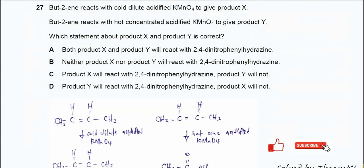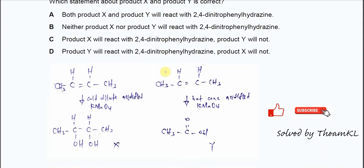Question 27. Butene reacts with cold dilute acidified KMnO4 to give X. And butene reacts with hot concentrated acidified KMnO4 to give Y. So which statement about X and Y is correct? Before you answer the question, you must know what is a product. So this is the reaction to produce compound X.